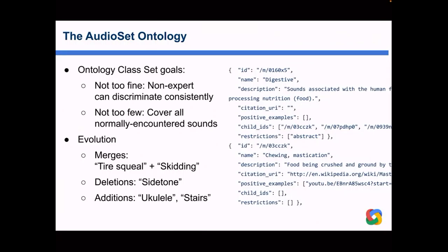We use machine IDs — these slash-m-slash identifiers — originally from Freebase, an open database of triples, though we had to reinterpret and invent new ones for sounds. For each of the roughly 600 entries we have an ID, a short name, a one-or-two sentence description, a few example YouTube videos showing positive examples, and a few other attributes.